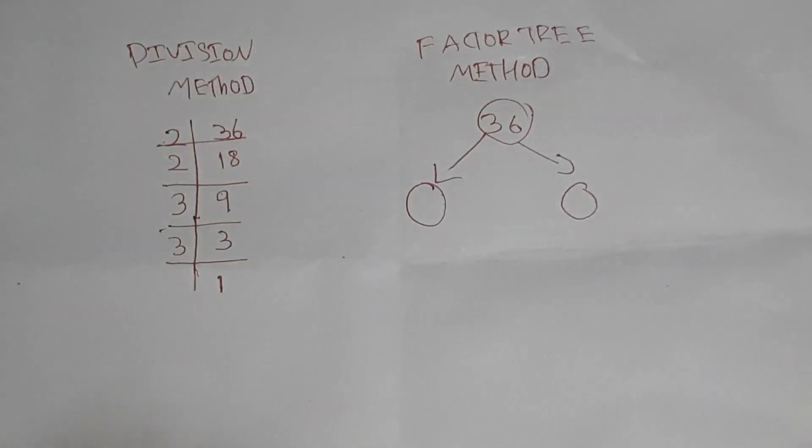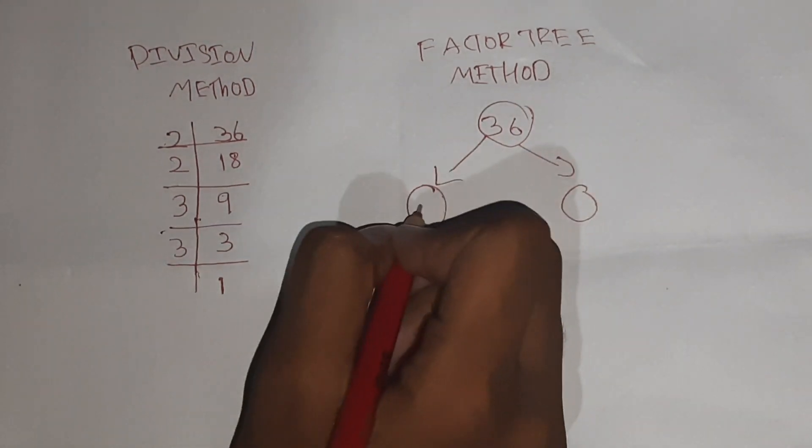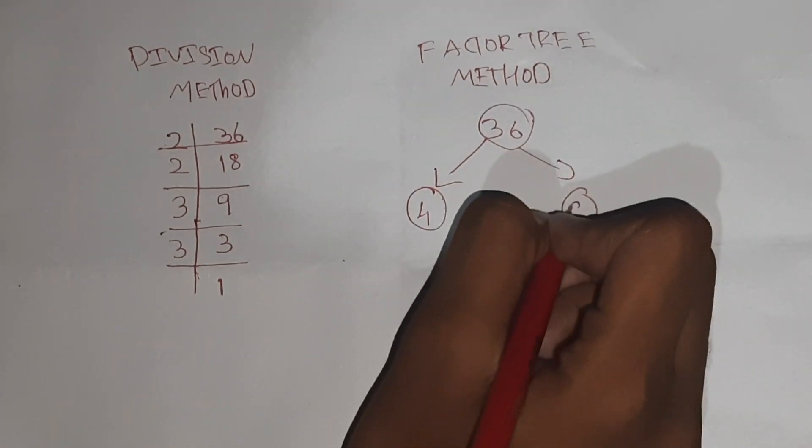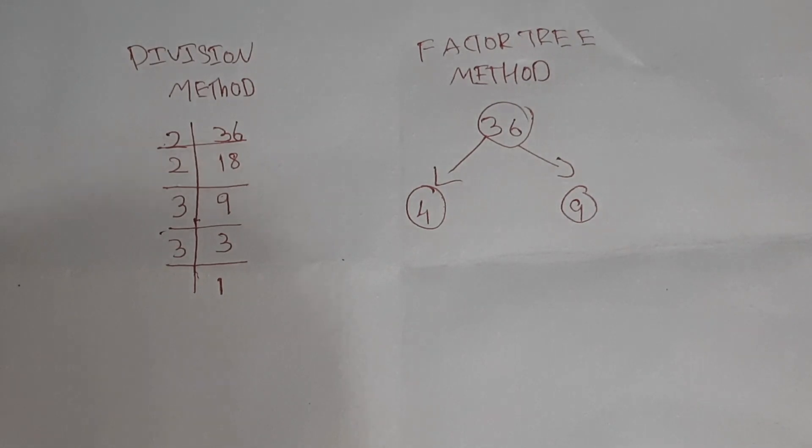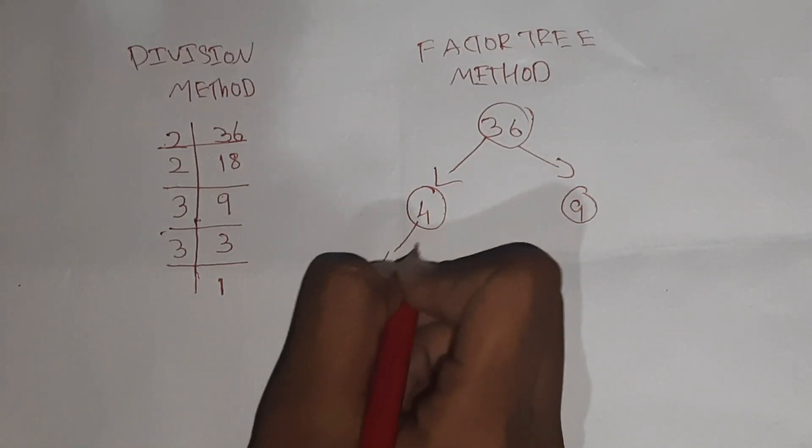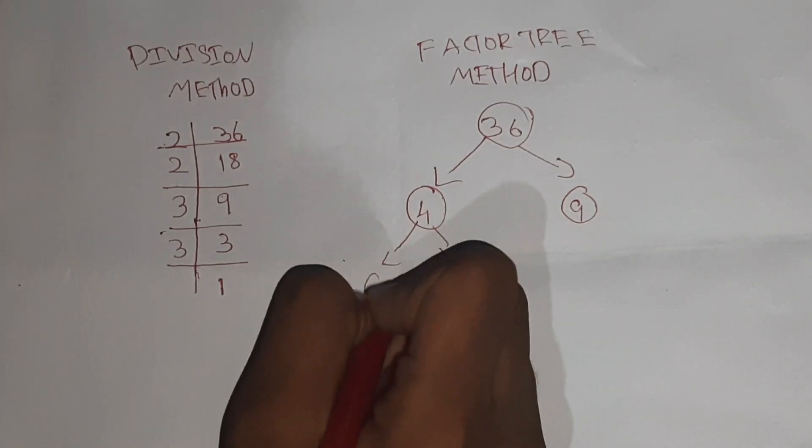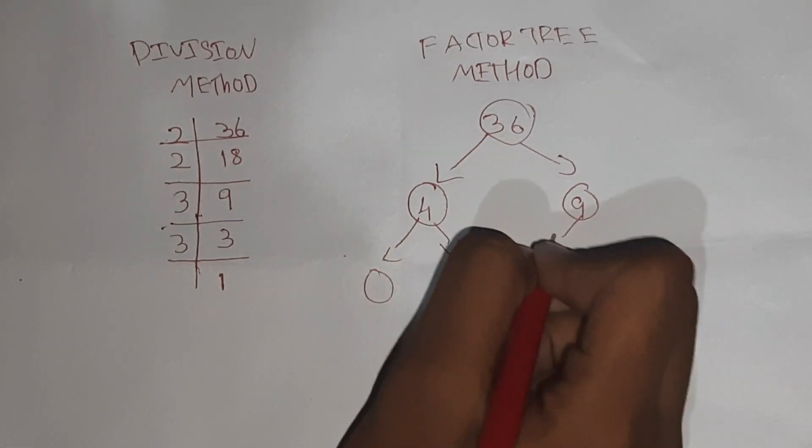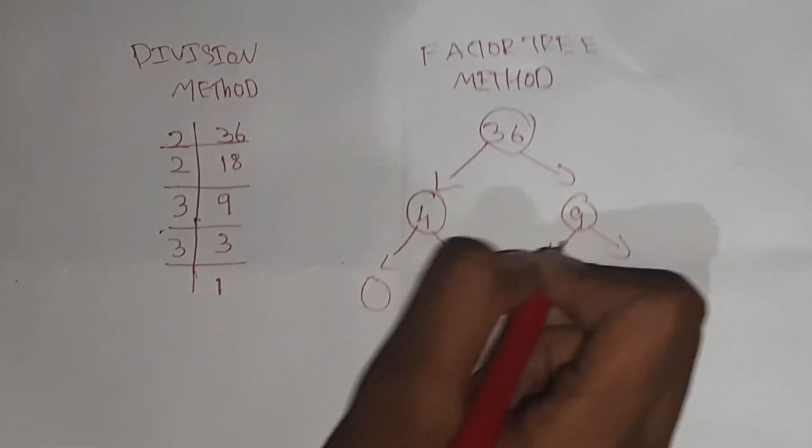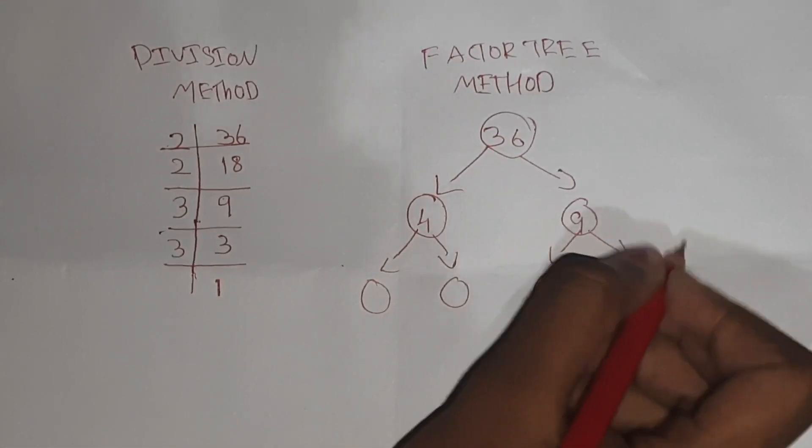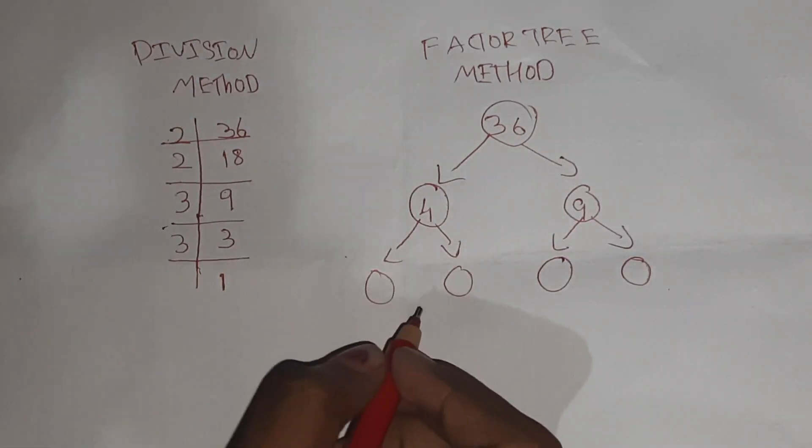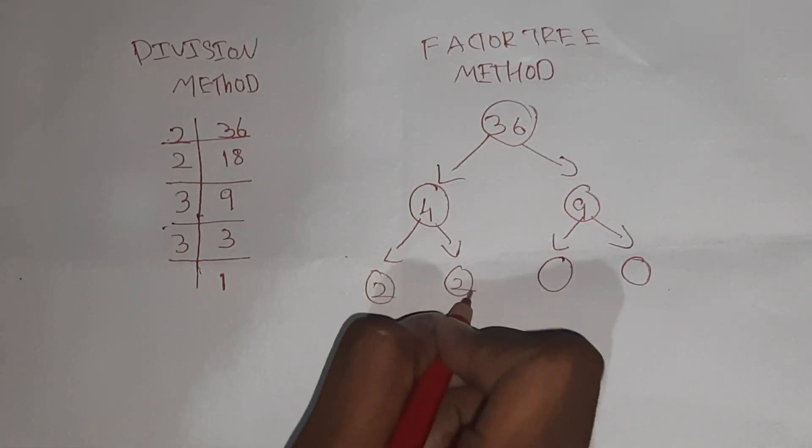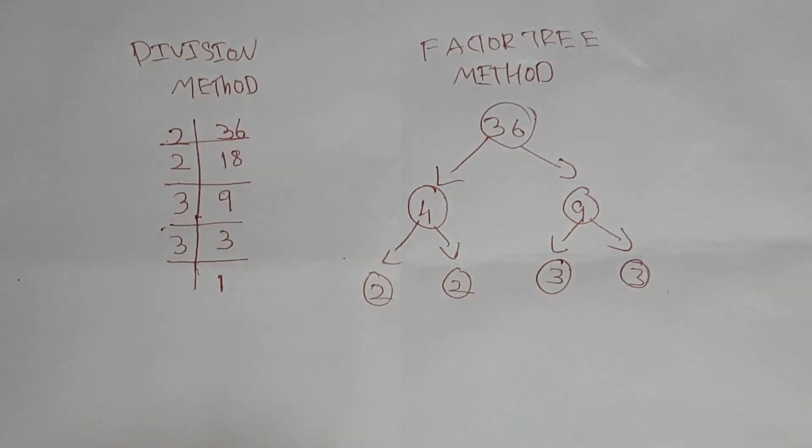36 breaks into 4 and 9. 4 is 2 times 2, and 9 is 3 times 3.